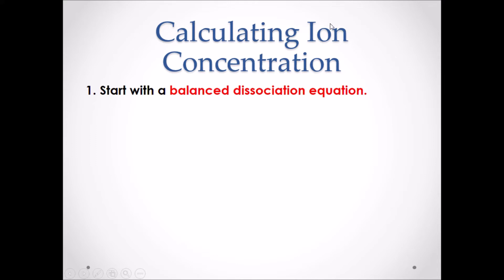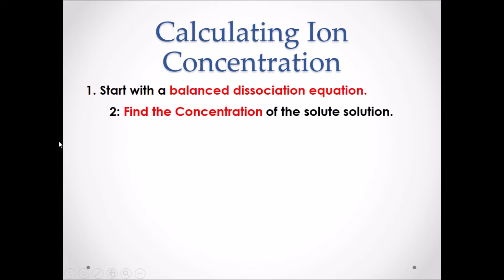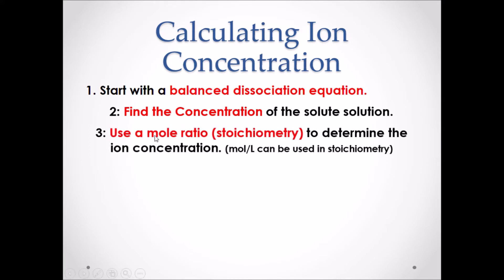Calculating Ion Concentration. Step 1: Start with a balanced dissociation or ionization equation. Step 2: Find the concentration of the solute in solution, meaning find the concentration of the substance you are putting into water. Step 3: Use a molar ratio — stoichiometry — to determine the ion concentration. Note that you can use moles per liter when performing a stoichiometry calculation.